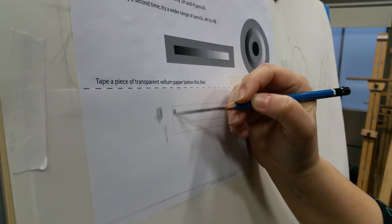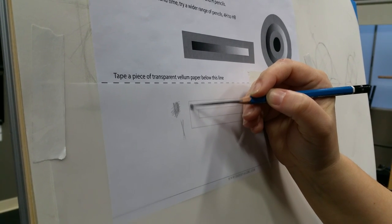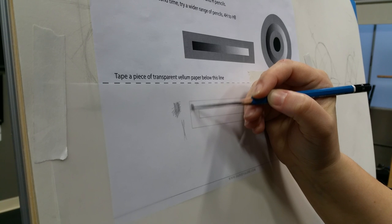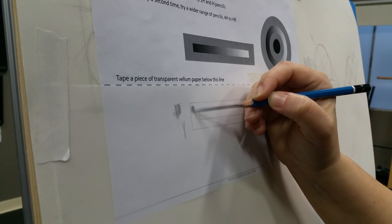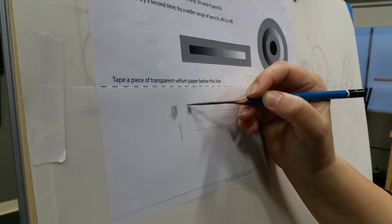And I'm just slowly building up the value, and I'm almost thinking of it like an airbrush. Like I'm just putting down a mist of graphite. I'm not thinking about individual strokes, and I'm just hovering to build up the values.